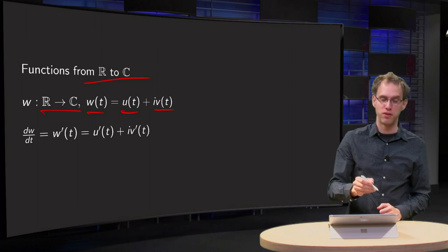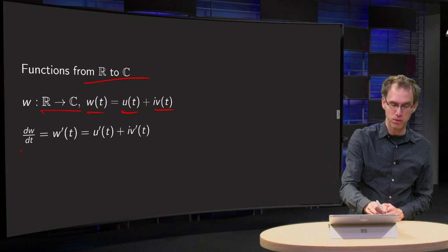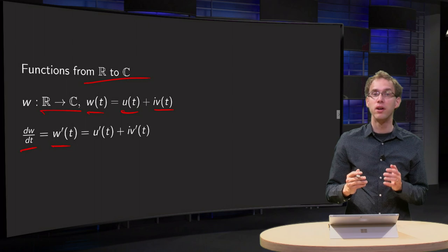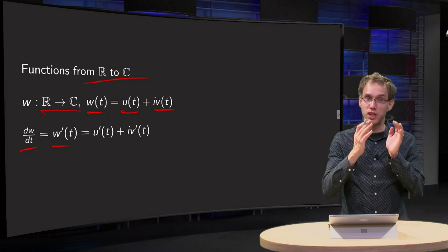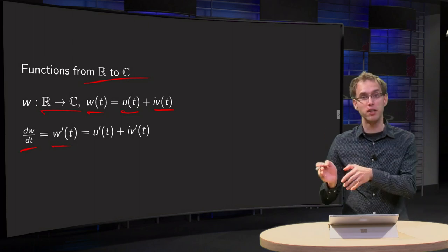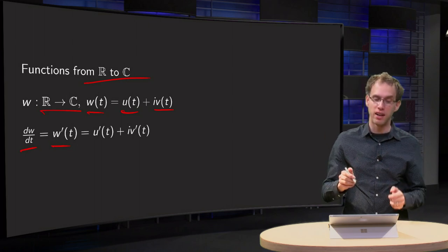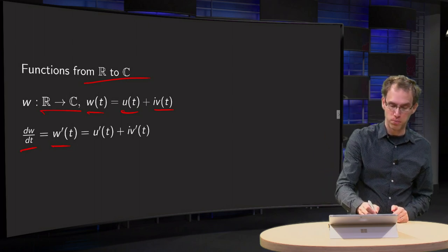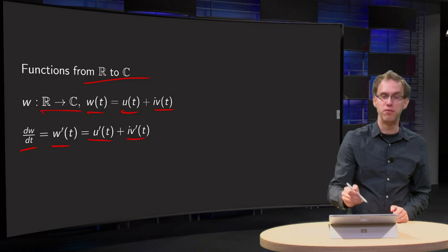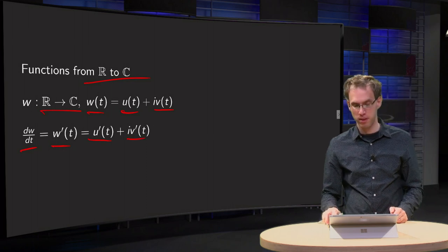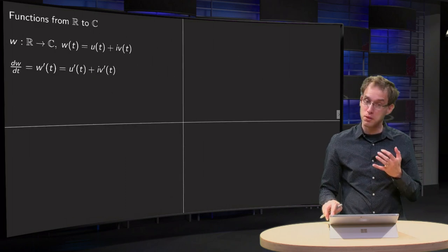So how is the derivative defined? dw/dt equals W prime — you differentiate the real and imaginary parts separately and then add them up as u prime plus i times v prime, as you would expect.